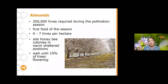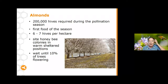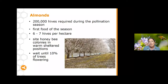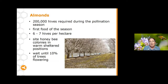For almonds, 200,000 hives are required during that fairly short pollination season. Almonds are also the first flowering crop of the season, so bees can be a little sluggish and in poor condition coming out of winter, needing a bit of extra care. Around six to seven hives per hectare is required. When deciding where to put them, make sure they're spread throughout the crop and in warm, sheltered positions since it's still quite cool. It's not really worth putting bees on until around 10% of plants are flowering.